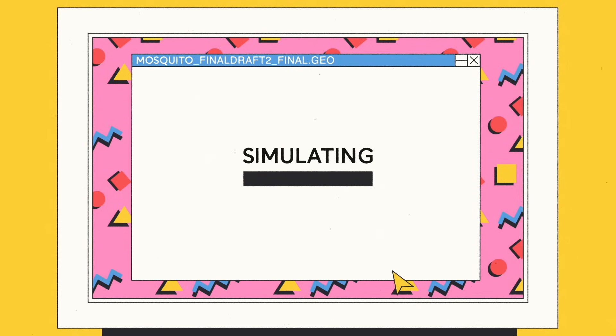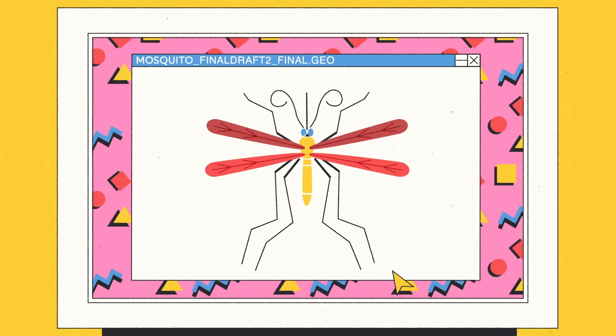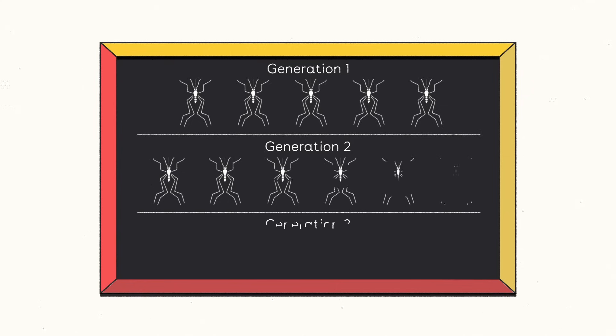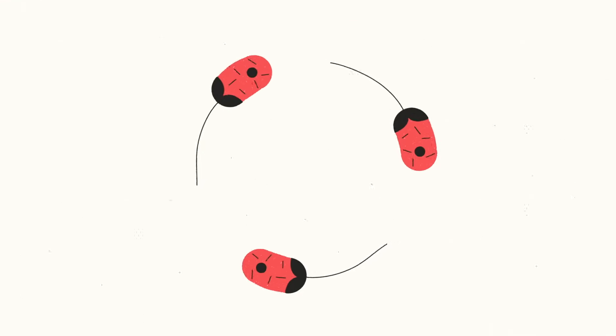CRISPR isn't perfect yet. It doesn't always make just the intended changes. And since it's difficult to predict the long-term implications of a CRISPR edit, this technology raises big ethical questions.